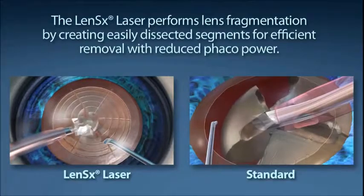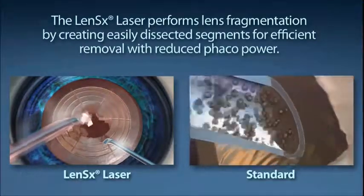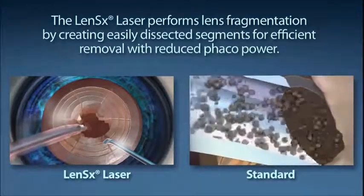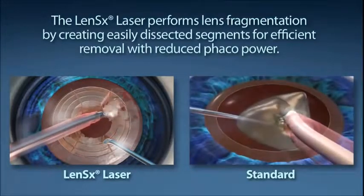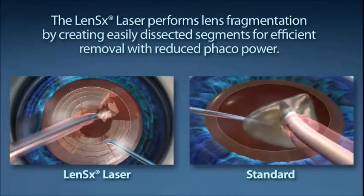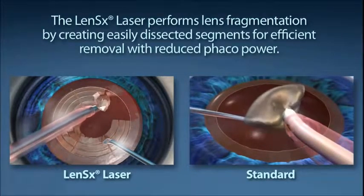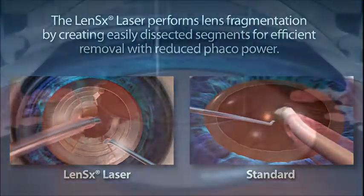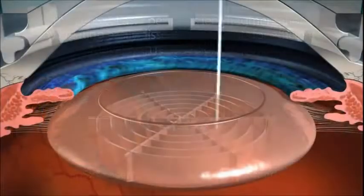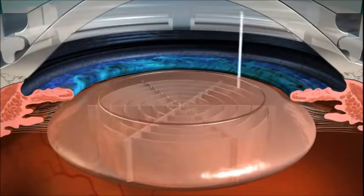Standard cataract surgery requires a phacoemulsification machine to segment and remove the content of the cataract. The goal of your surgeon is to reduce the amount of phaco energy used to remove your cataract. The LensX laser performs lens fragmentation, creating easily dissected segments for efficient removal with little or no phaco power.